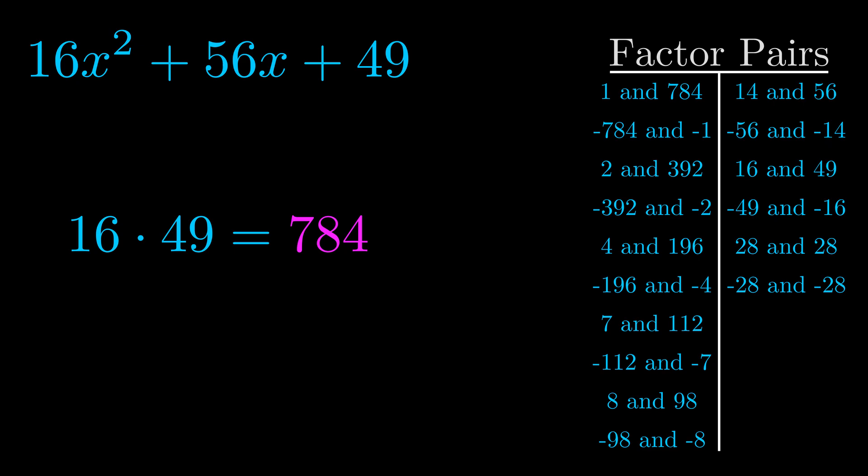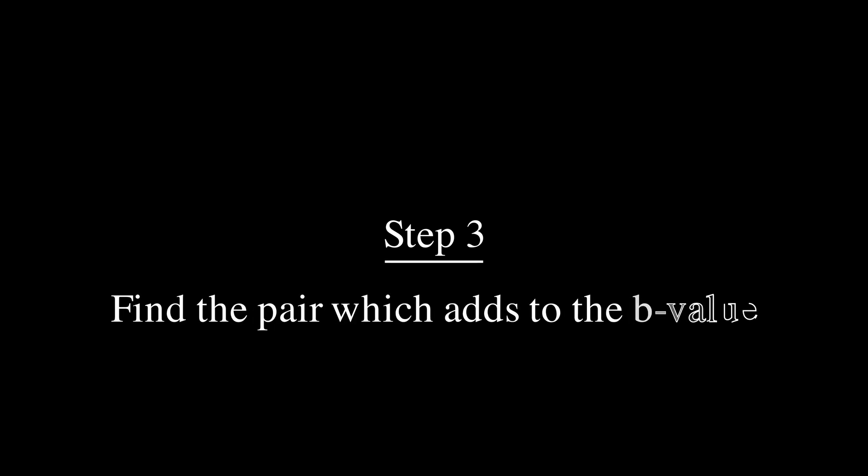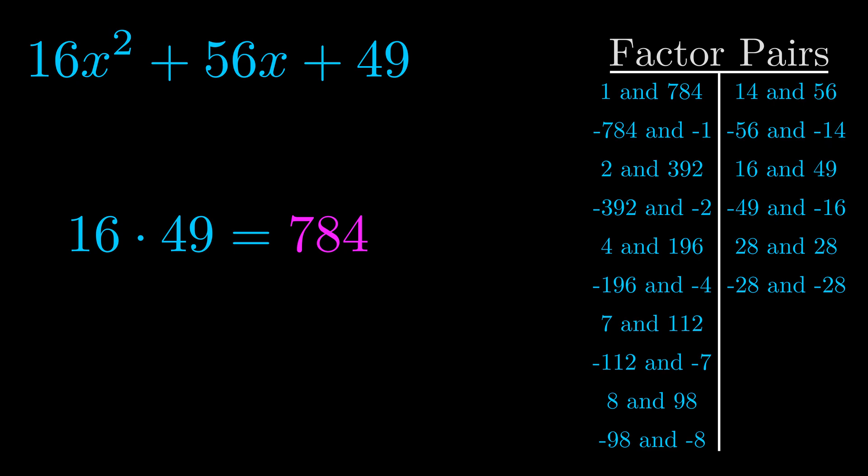Now once you have these factor pairs, the goal is to find which of these pairs adds to the b value. The b value is the coefficient on the x term. That's the middle term, the one that we haven't done anything with yet. And really this is the only factor pair that we need.